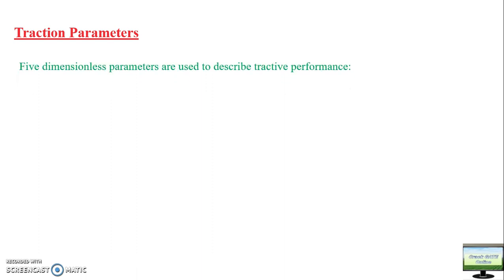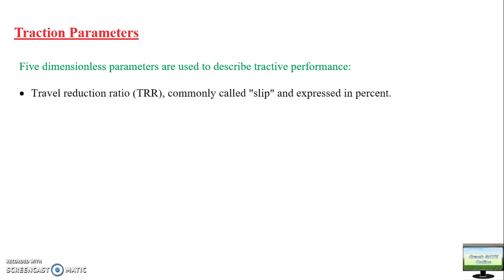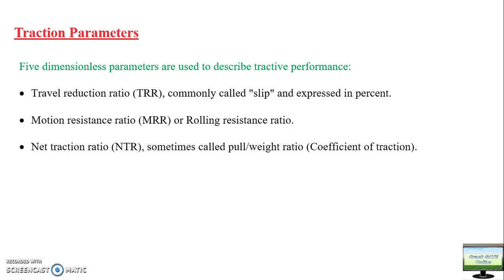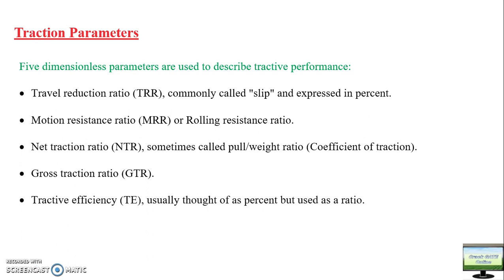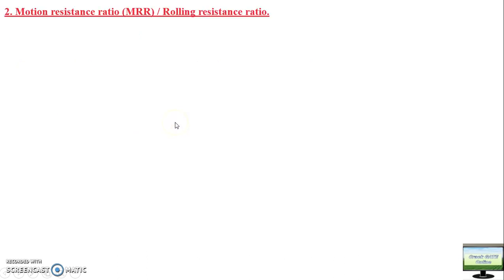The first parameter is travel reduction ratio or slip. The second is motion resistance ratio or rolling resistance ratio. The third is net traction ratio or coefficient of traction, also called pull-by-weight ratio. The fourth is gross traction ratio, and the final one is tractor efficiency. In my last video I explained travel reduction ratio or slip. In this video I will explain the next ratio: motion resistance ratio (MRR) or rolling resistance ratio.